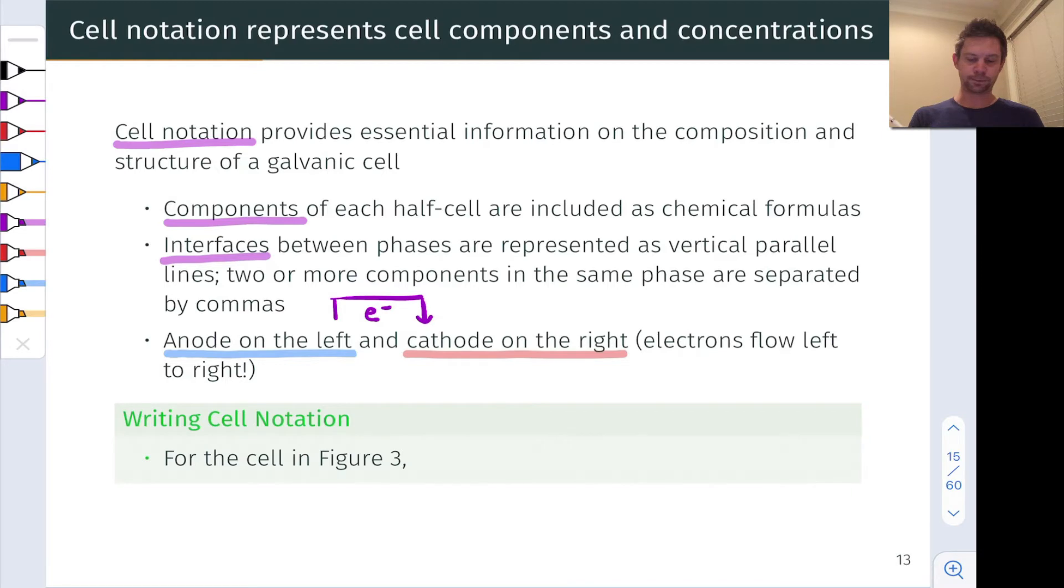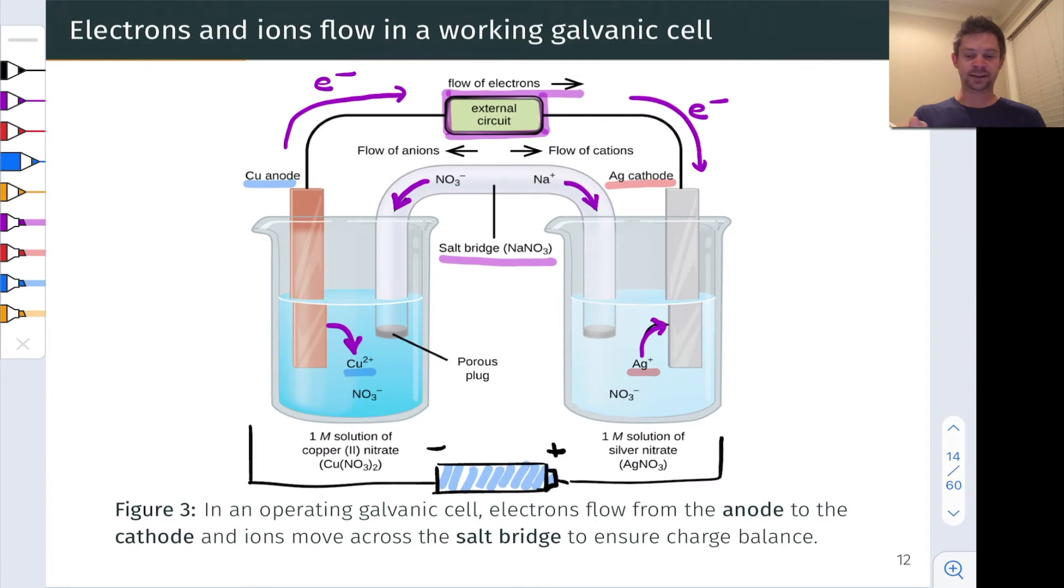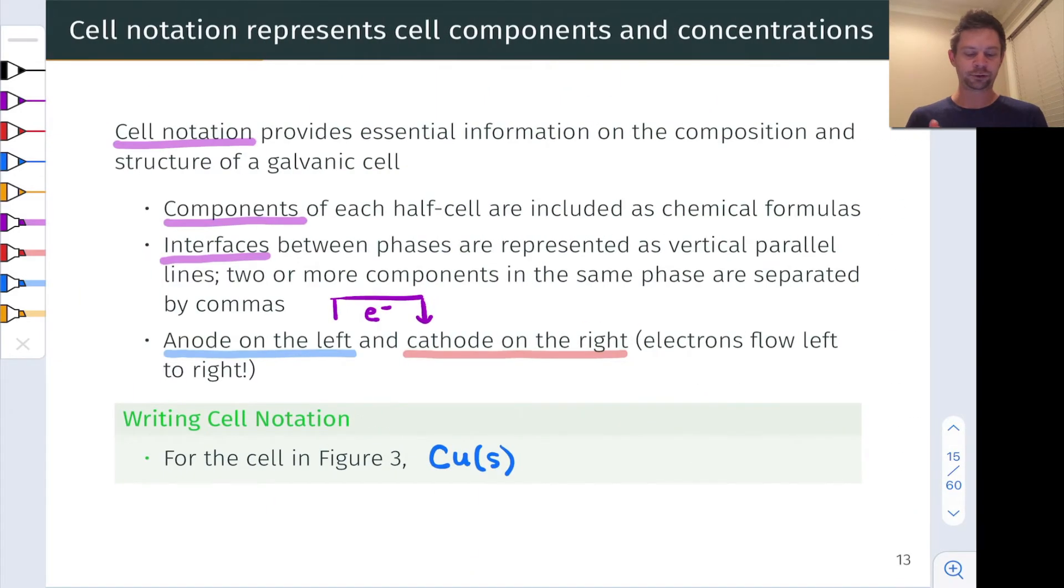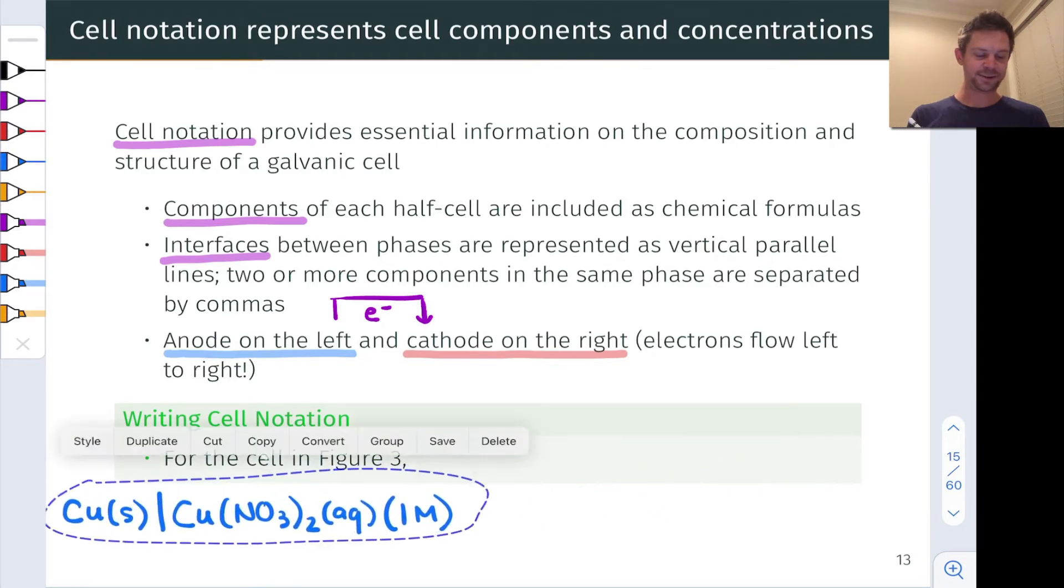We're going to write copper solid. That copper solid is in a phase of its own, in a solid phase by itself. The copper two nitrate solution is an aqueous solution at a concentration of one mole per liter. That concentration needs to be included in the cell notation. We're onto a new phase, so we're going to draw a vertical line. We're going to include Cu(NO3)2 aqueous and one molar in the cell notation as well.